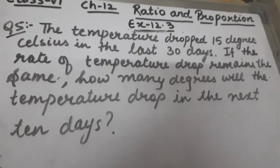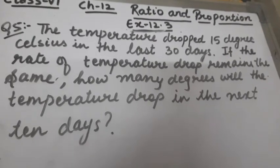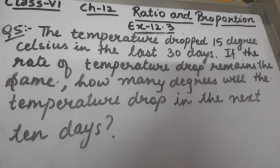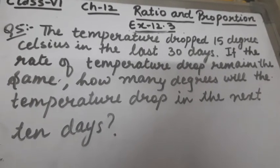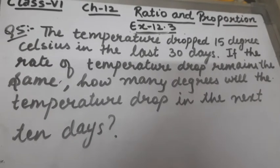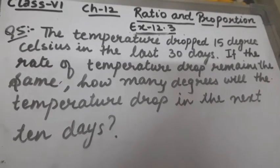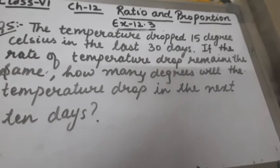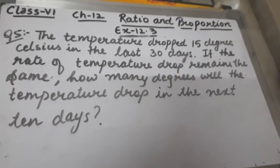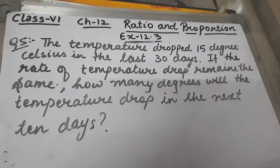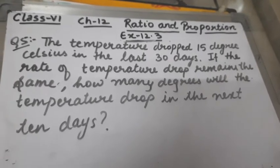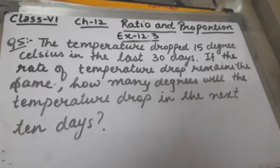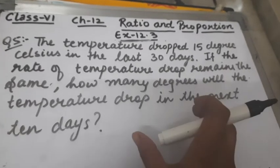Let's start question number 5 of Exercise 12.3. The question is: the temperature dropped 15 degrees Celsius in the last 30 days. If the rate of temperature drop remains the same, how many degrees will the temperature drop in the next 10 days?